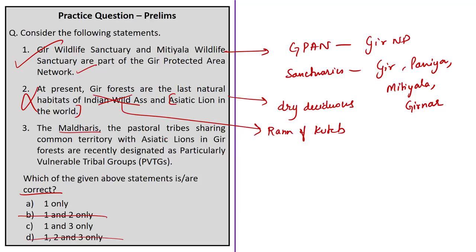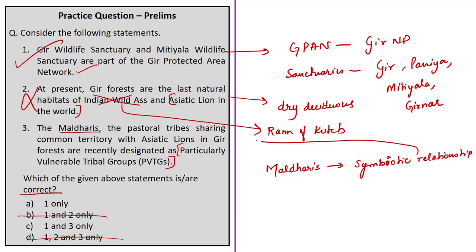The second statement — that Gir forests are the last natural habitats of Indian wild ass and Asiatic lion — is partly incorrect. Gir forests are the only place where Asiatic lion is found in natural habitat, but the Indian wild ass is mostly present in the Rann of Kutch, not in Gir forests. Since statement 2 is incorrect, options B and D can be eliminated. The third statement — that the Maldharis pastoral tribes are recently designated as Particularly Vulnerable Tribal Groups (PVTGs) — is also wrong; they have not yet been designated as PVTGs. The correct answer is option A — statement 1 only.